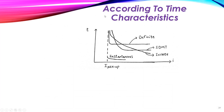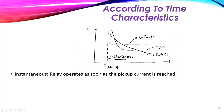According to time characteristics, there is a relationship between the relay operating time and the value of the short-circuit current. The types are: instantaneous, definite, inverse, and inverse definite minimum time (IDMT). The instantaneous type operates as soon as possible when the current exceeds the pickup value — the operating time is very small, just a few cycles.